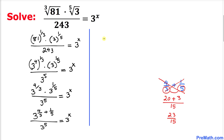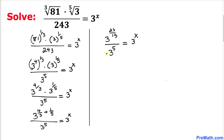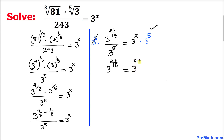So our equation becomes 3 to the power 23 over 15, divided by 3 to the power 5, equal to 3 to the power x. Now let's remove the fraction by multiplying both sides by 3 to the power 5. On the left-hand side the 3 to the power 5 cancels, leaving 3 to the power 23 over 15. On the right-hand side, using the product rule, we get 3 to the power x plus 5.